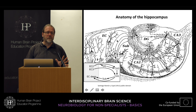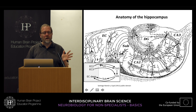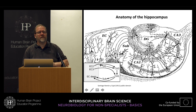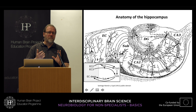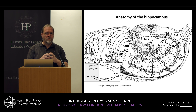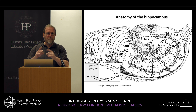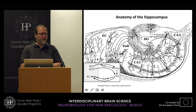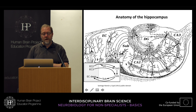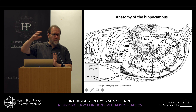Principal cells include granule cells in the dentate gyrus, forming a dense layer, and pyramidal cells in the hippocampus proper — CA3, CA2, and CA1. This hippocampal trisynaptic circuitry is integrated with cortical regions called the entorhinal cortex. The circuit runs from the entorhinal cortex via the perforant path to the dentate gyrus; granule cells send their axons — called mossy fibers — to CA3; CA3 sends axons called Schaffer collaterals to CA1.